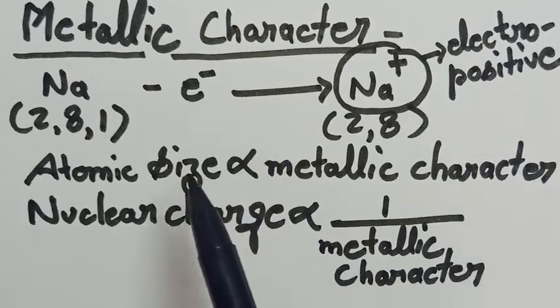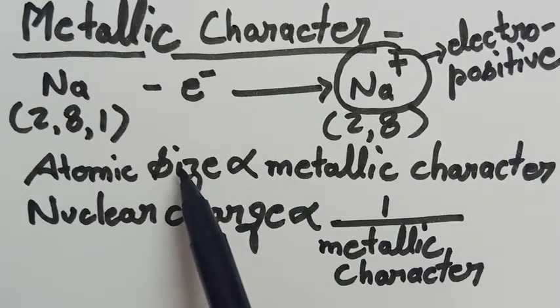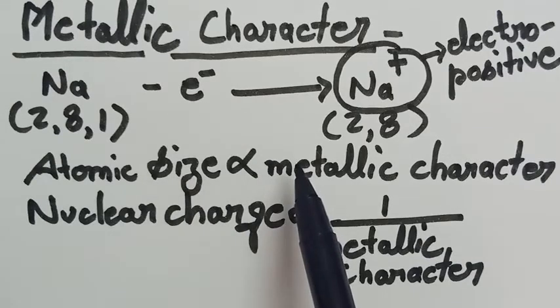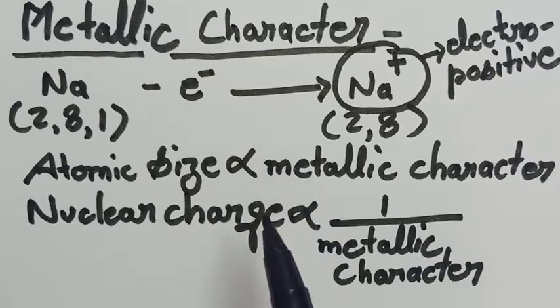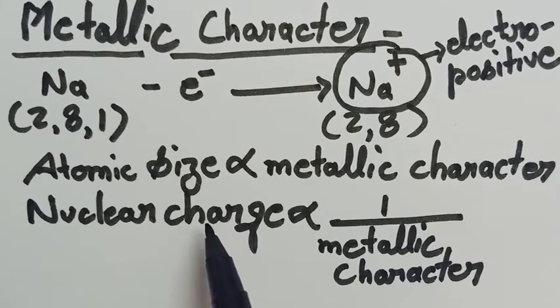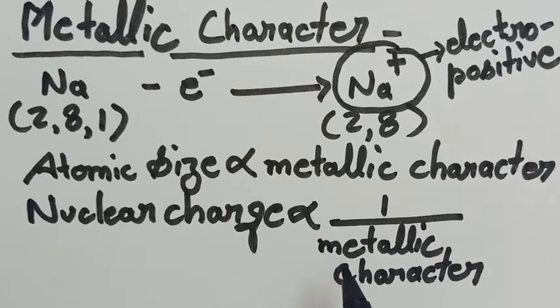The changes that occur on one side will be the same on this side also, whereas these changes will be opposite — meaning, increasing the nuclear charge causes the metallic characteristic to decrease.